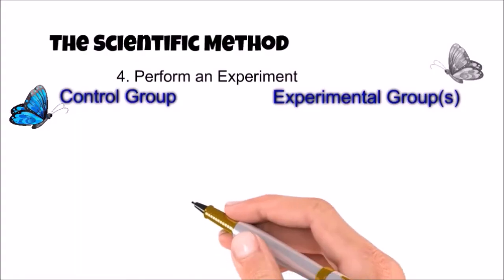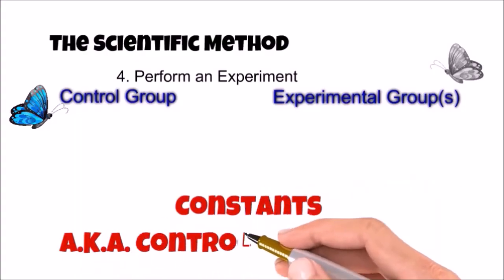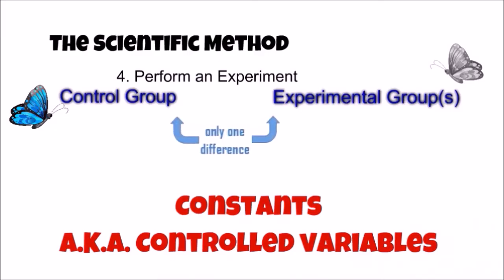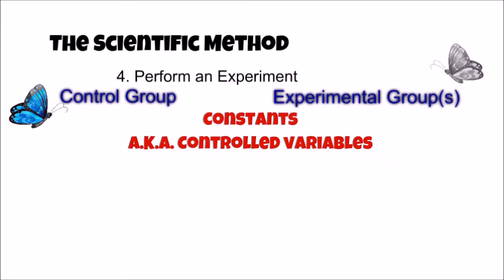An important part of experimental design are constants, also known as control variables. Ideally, there should be only one difference between the experimental and control groups, and that's the independent variable. Other possible variables are controlled by scientists to be sure the data collected is only the result of the independent variable being tested. So, constants and controlled variables are factors that are kept the same during the experiment.